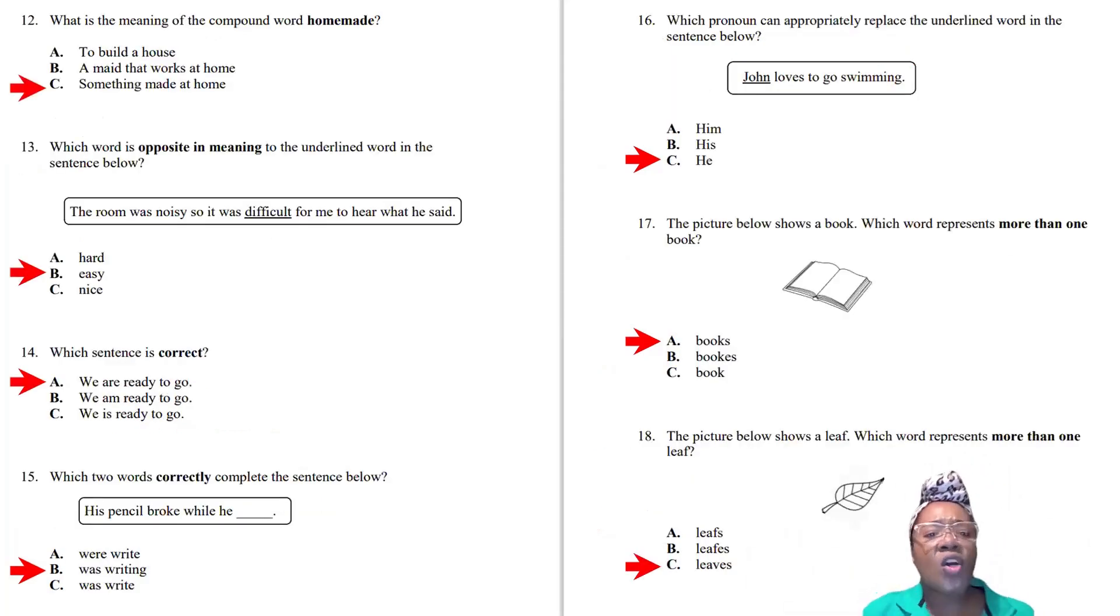Question twelve: Meaning of the compound word homemade. Something made at home. Question thirteen: Which word is opposite in meaning to the underlined word? The sentence says 'The room was noisy, so it was difficult for me to hear what he said.' Opposite of difficult is easy.